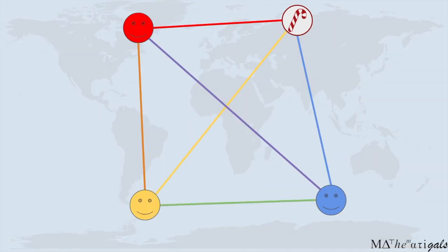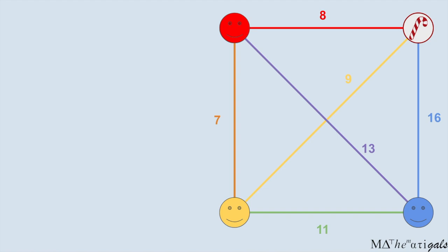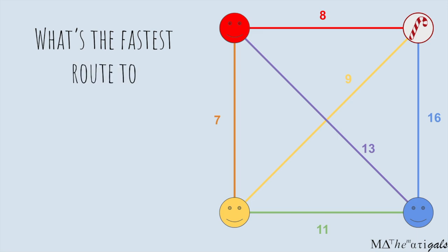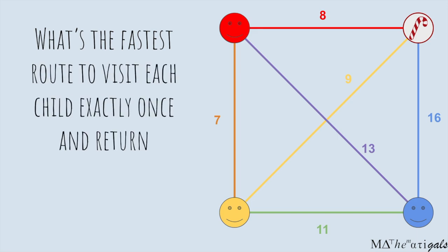Let's visualise the problem as a square. Let's use the square to help Santa answer his question. What's the fastest route to visit each child exactly once and return to the North Pole?